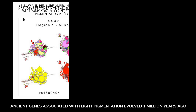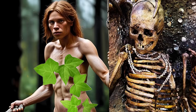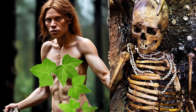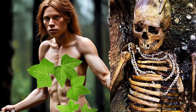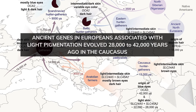Neanderthal and Denisovan genome sequences, which diverged from modern human sequences 804,000 years ago, also contain the ancestral allele. The researchers discovered ancient variants in the light-skinned San people in two interconnected genes called HERC2 and OCA2, which are associated with light skin, eyes, and hair in Europeans, but originated in Africa. The variants first appeared around a million years ago and then spread to Europe and Asia, with the most recent common ancestor for the derived allele living between 996,000 and 1.2 million years ago.